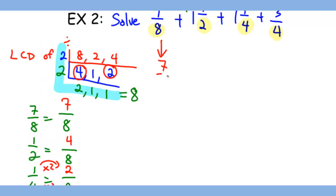So we have 7/8 plus 1 and 4/8 plus 1 and 2/8 plus 6/8. The only thing that you need to add together is the whole numbers and the numerator. The denominator will stay the same.